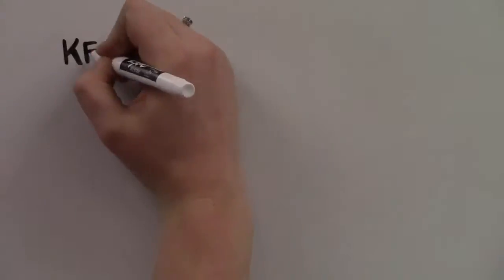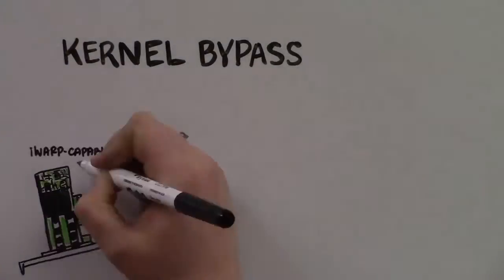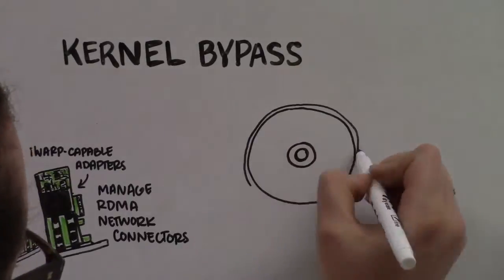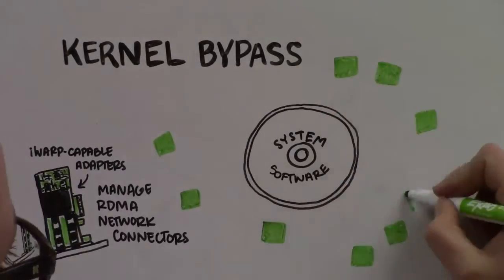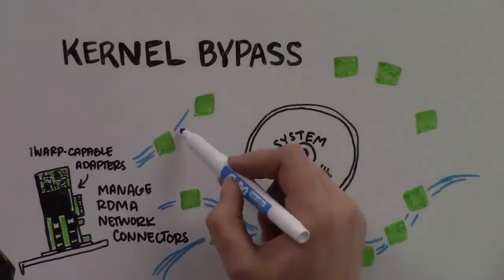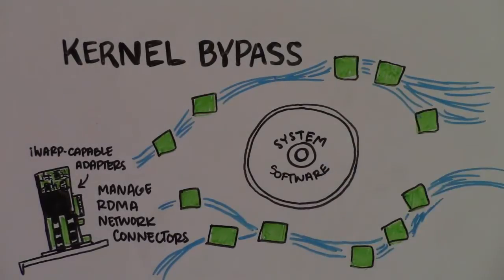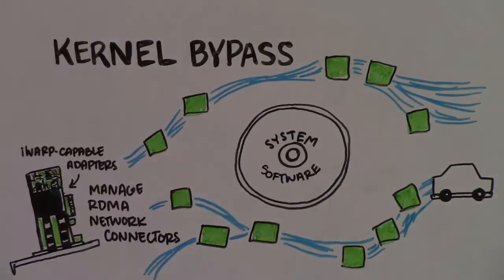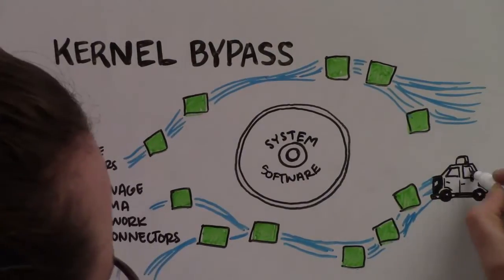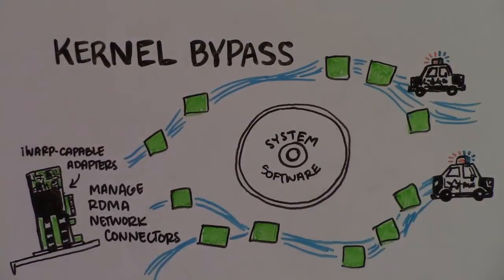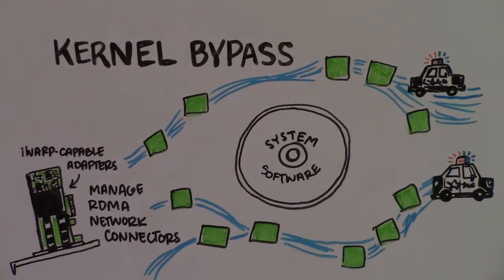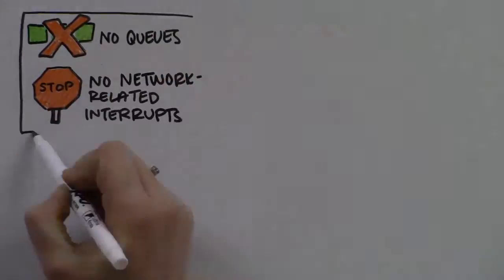iWARP RDMA provides a different approach. Kernel Bypass lets iWARP capable adapters manage the RDMA network connections, avoiding the system software as much as possible. iWARP itself does the connection management between the source and destination by establishing queue pairs between them. Via queue pairs, iWARP bypasses the host processor and transmits packets of data directly to the application's user space. No queues for the processor to manage or network-related interrupts to handle.